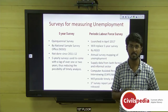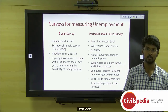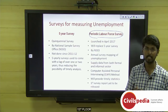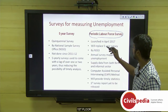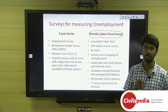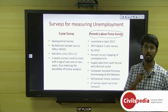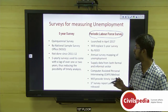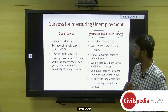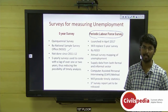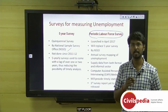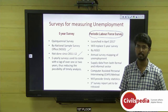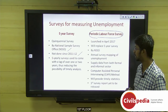Let's move on to surveys for estimating unemployment. This topic was in the news because survey outputs were leaked. Traditionally we have the five-year quinquennial unemployment survey, developed by the National Sample Survey Office. It started in the 1950s and was conducted once every five years from 1970–73. The last survey was conducted in 2011–12, and reports indicate this five-year survey has not been conducted since.